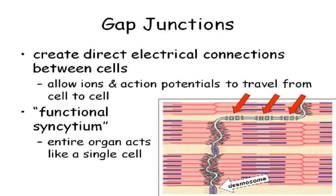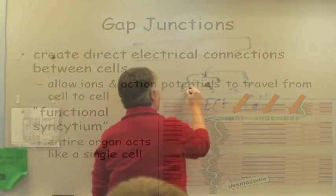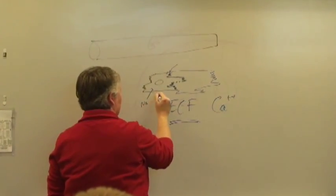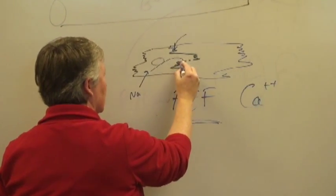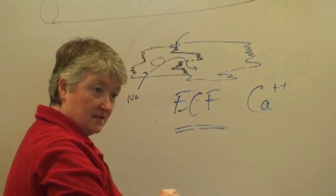What is a gap junction? A gap junction is basically a tunnel for ions. So what happens is, if sodium ions go into one cell, the sodium ions don't have to go back out — they can travel from one cell to the next through the gap junction.